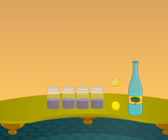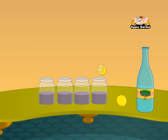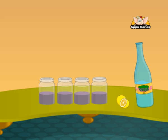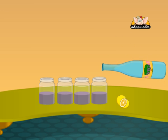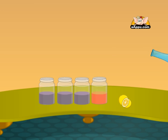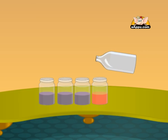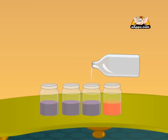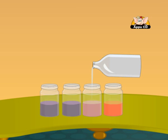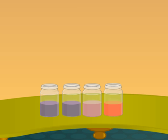Test lemon juice and vinegar. They are acids because they turn the cabbage water red. Let's now add distilled water to the cabbage water — it stays reddish purple. Hence, we can say that distilled water is neither an acid nor an alkali.